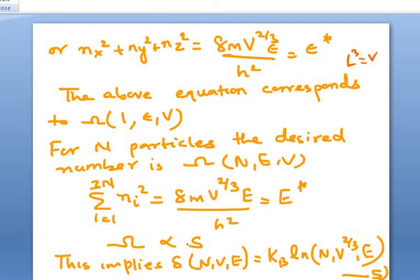Now we know Ω is proportional to S, or S is proportional to Ω. Then our S which is a function of N,V,E will be equal to kB ln Ω. And Ω here is expressed as N V^(2/3) E. Because here we are writing V^(2/3) E. So this is equation number 5.